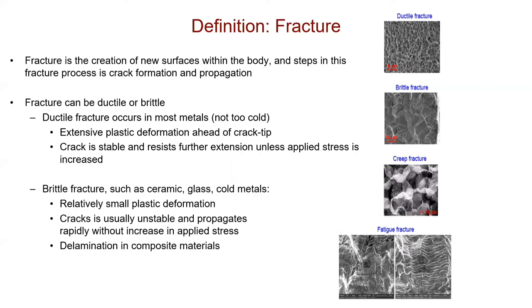Fracture can be either ductile or brittle. Ductile fracture usually occurs in most metals and you'll have a lot of extensive plastic deformation ahead of the crack tip. In brittle fracture, for example where delamination in composite materials could be brittle fracture, the crack usually is unstable and propagates rapidly without increasing the applied stress.